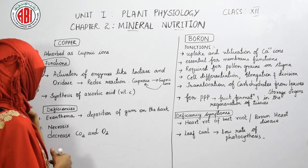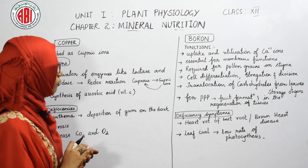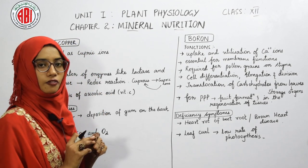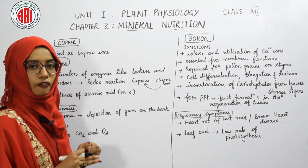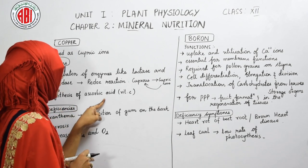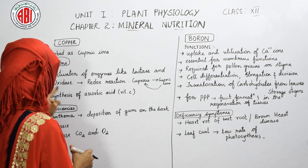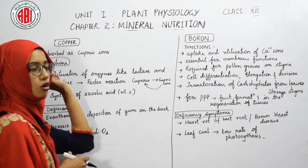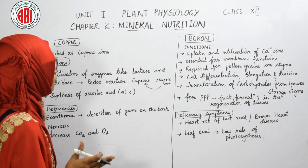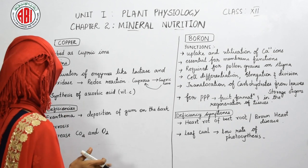Copper ions are also required for the synthesis of ascorbic acid, which is Vitamin C. Ascorbic acid is present in citrus plants and is produced in the presence of copper ions. These are the main functions carried out by the mineral copper.